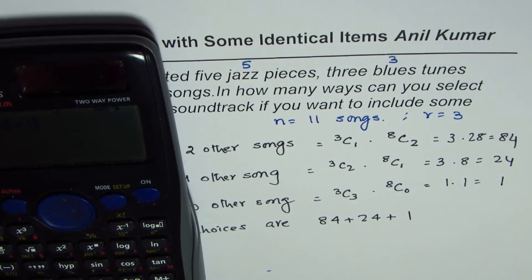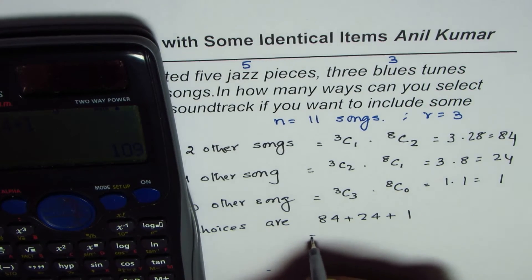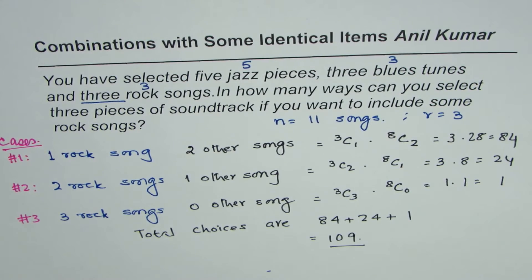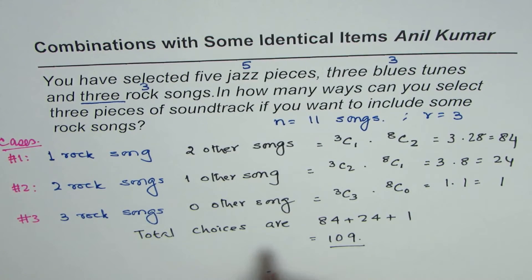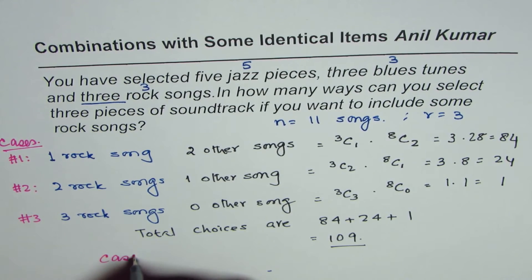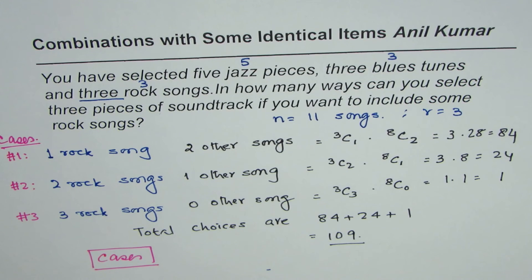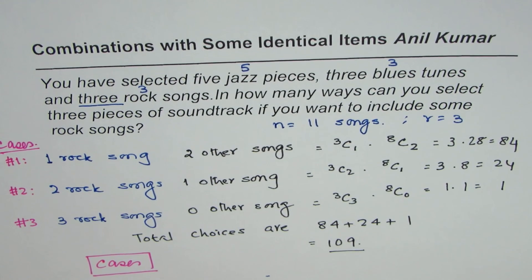84 plus 24 plus 1 equals 109, so that is our answer. Remember: when you have identical items and restrictions, the important thing is to take care of cases. Apply cases in such situations — that is the key to solving such questions. I hope that helps, thank you and all the best.